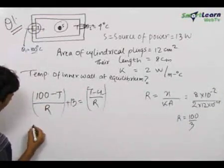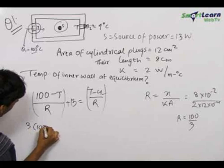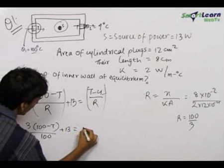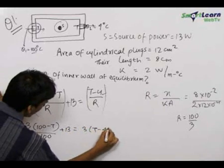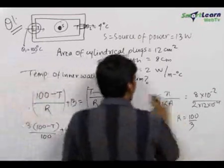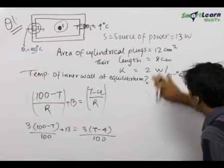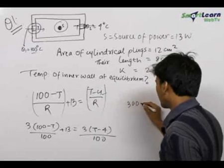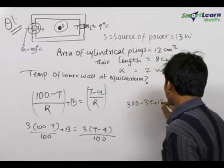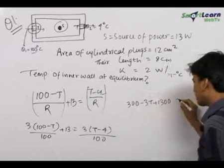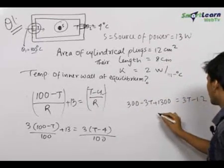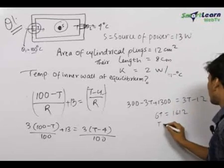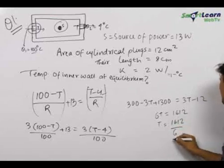On putting 100/3 in our equation, we get: 3(100 - T)/100 + 13 = 3(T - 4)/100. Let us solve this. 300 - 3T + 1300 = 3T - 12. So we get 6T = 1612. Therefore, T = 1612/6.